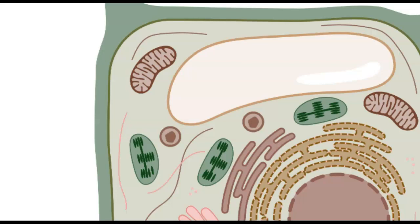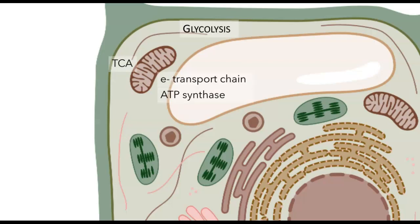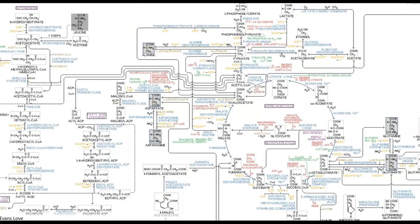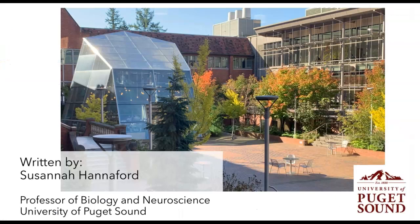Plant cells have these reactions as well — glycolysis in the cytoplasm, the tricarboxylic acid cycle in mitochondria along with the electron transport chain and ATP synthase. But plant cells also have another reaction: photosynthesis, which takes place in the chloroplasts. That's a very brief overview of metabolic pathways, and we can dive into the specifics of individual reactions in future videos.